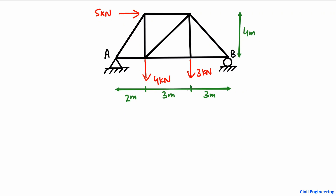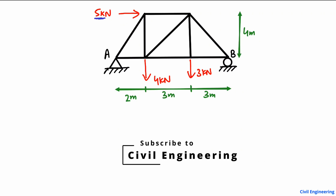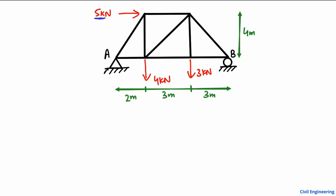We have a truss here with different loads acting on it. A 5 kN horizontal load is acting on this truss, and there are also two vertical loads of magnitude 4 kN and 3 kN. Now, how do we find the support reactions for this truss?